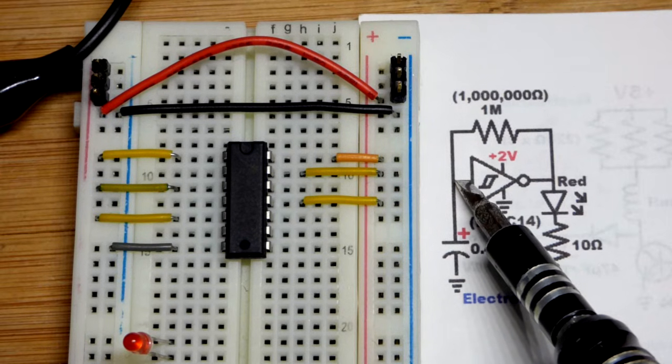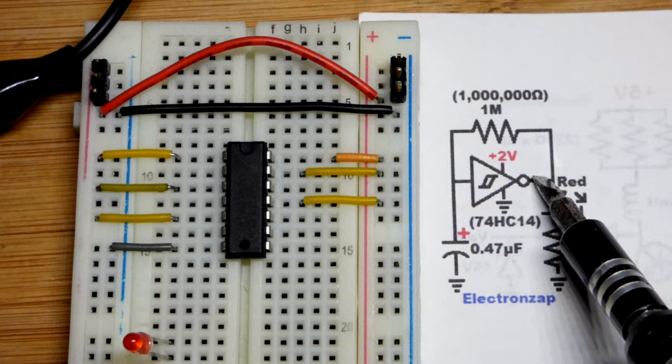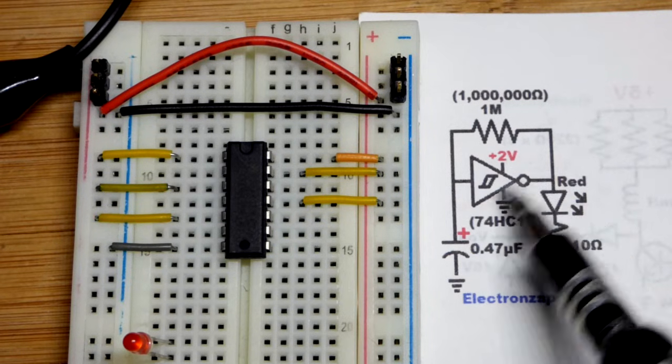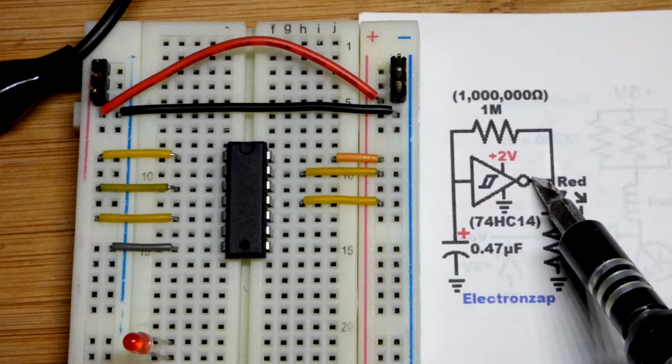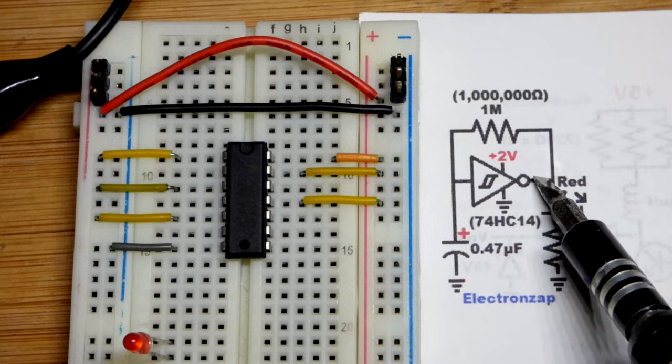If you've got a high enough voltage in, the output's going to be low, connected to ground as best as it can. If the voltage is low enough, then the output's going to be high, connected to the positive supply. So it's going to be the opposite.